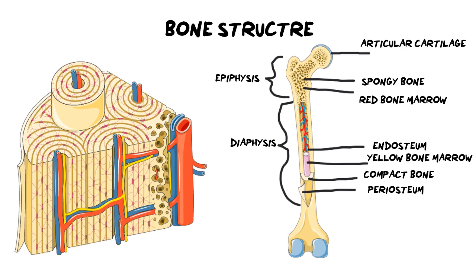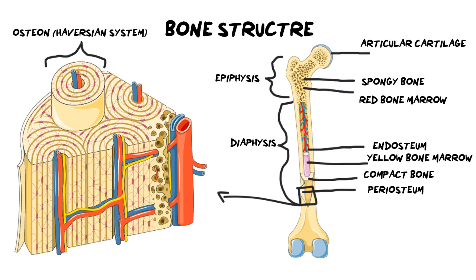We're going to zoom in on a piece of the compact bone. If I were to cut a chunk out of that bone, we're going to look on the left hand side — what does that look like up close? We have a lot of very small structures making what we call concentric circles around each other, and what you are looking at here is a Haversian system. This entire set of circles wrapping around each other is known as a Haversian system, or in some textbooks it's also known as an Osteon. There are many Osteons — you can see there are at least four in this diagram.